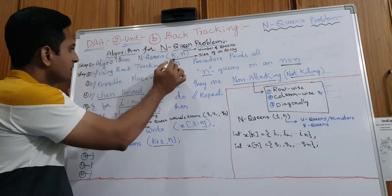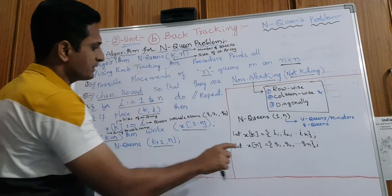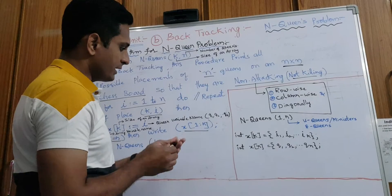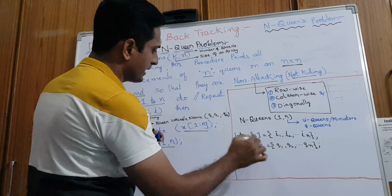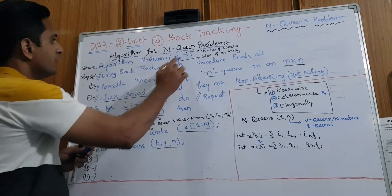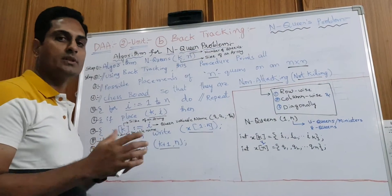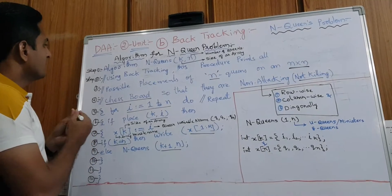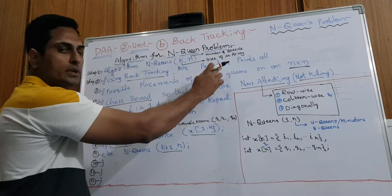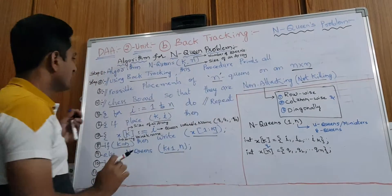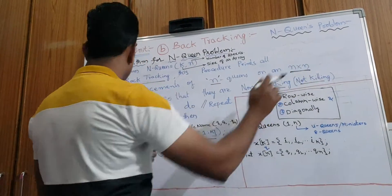First one: algorithm N-Queens. K is the size of the array — enter X of K. K is the size of the array; N is the number of queens. It may be four queens or eight queens. Using backtracking, this procedure prints all possible placements of N queens on an N by N chessboard.